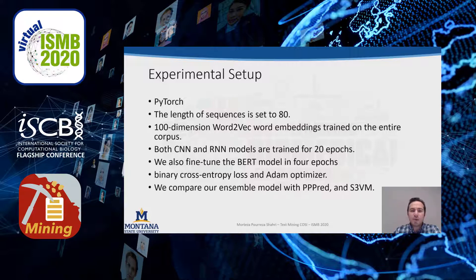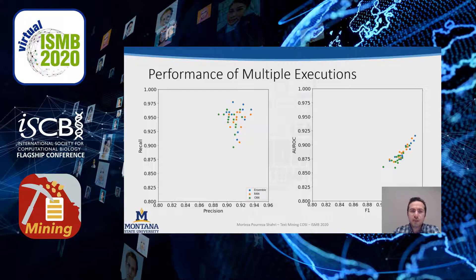We compare our ensemble model with PP-PREP and S3VM, a semi-supervised model based on support vector machines, and report precision, recall, and F1 values. The results show that our ensemble model provides better precision and recall values than using either RNN or CNN alone, and also provides better F1 and AUROC values.